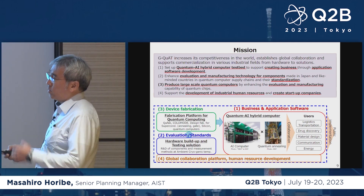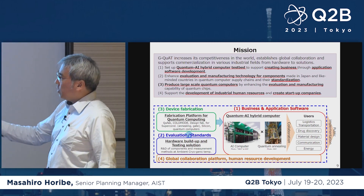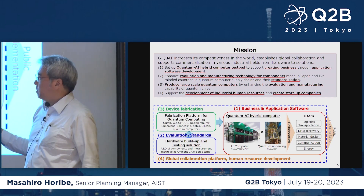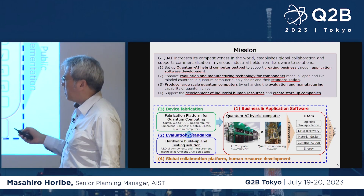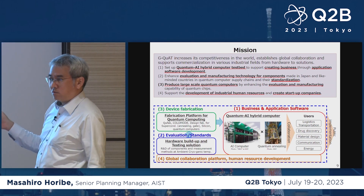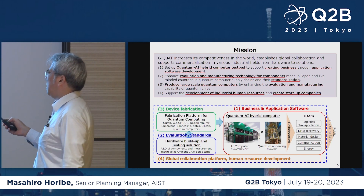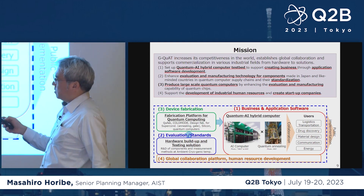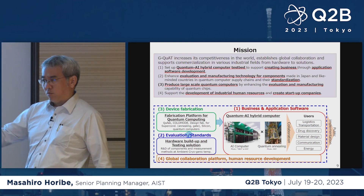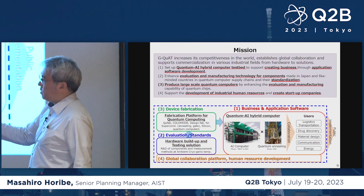These components should be used on the global arena, so they need to be standardized. Enhanced hub functions should be in place. AIST cannot do everything alone, so we need to collaborate with every possible organization. The research hub should be a center for those initiatives for extended collaborations.